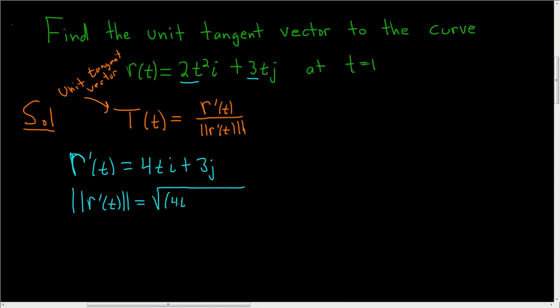That's 4t squared plus 3 squared. You square the components, add them, and take the square root. So ||r'(t)|| equals the square root of 16t² plus 9.